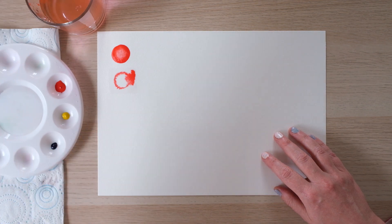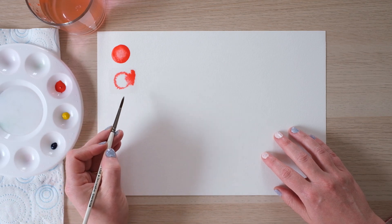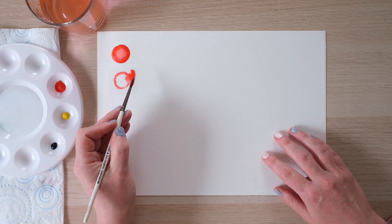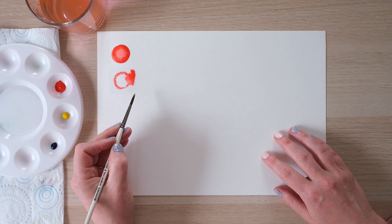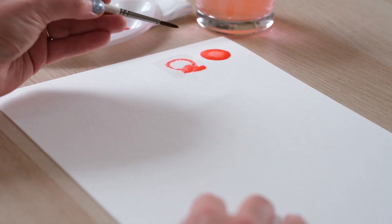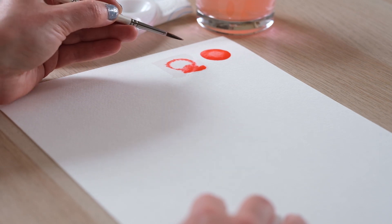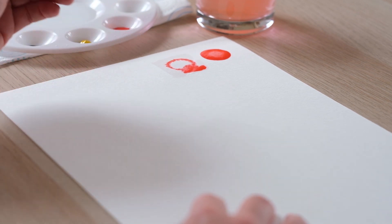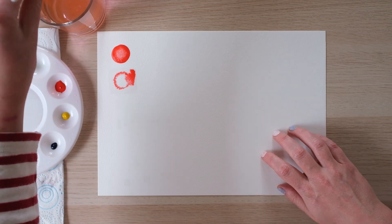Now some of you might be painting along at home and it will look very different. Some of you may have a completely full coloured square of water and you're just like what's going on it's gone completely haywire and some of you may have had a square with water and a circle that really didn't go very far at all. Now let's have a look at why that might be.